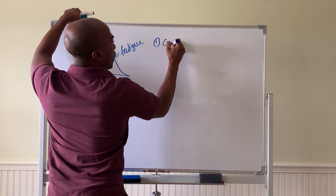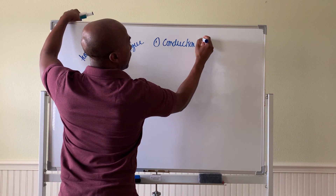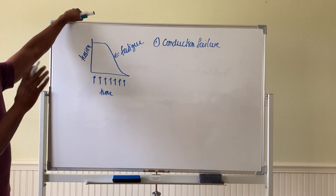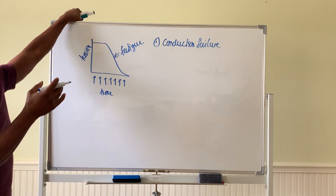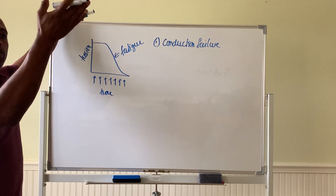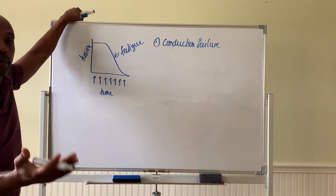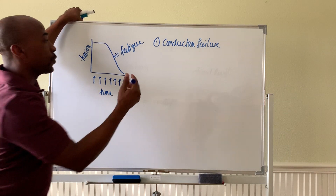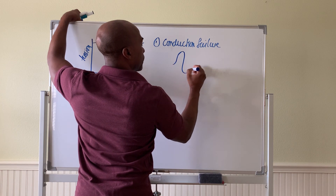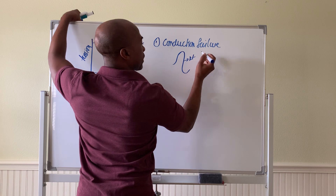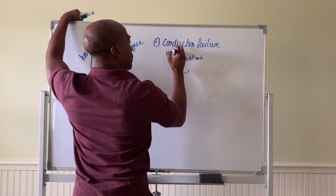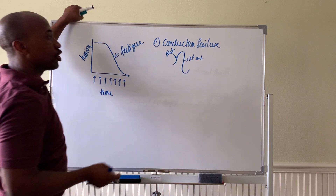The first is what we call conduction failure. Remember your muscle cells can generate action potentials, and they still require the same sodium and potassium ion distribution to create the depolarization wave, the repolarization, and the hyperpolarization phases. So you still have to have this process going on — K+ coming out, Na+ coming in, as usual.